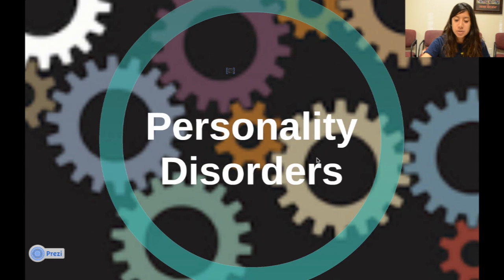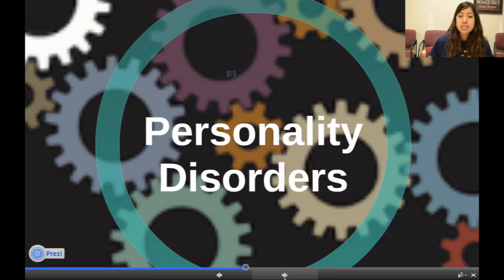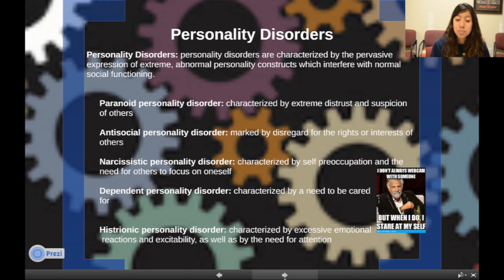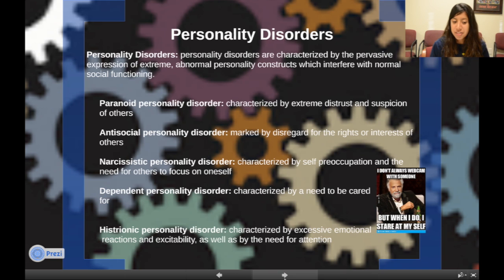Personality disorders are characterized by the pervasive expression of extreme abnormal personality constructs which interfere with normal social functioning. Examples include paranoid personality disorder, characterized by extreme distrust and suspicion of others, and antisocial personality disorder, marked by disregard for the rights or interests of others.